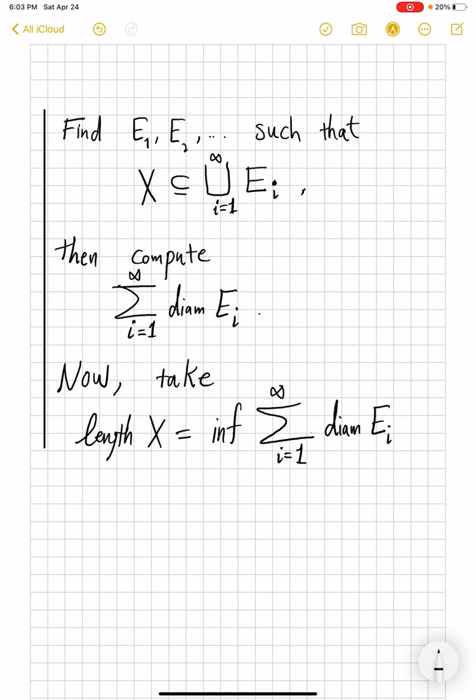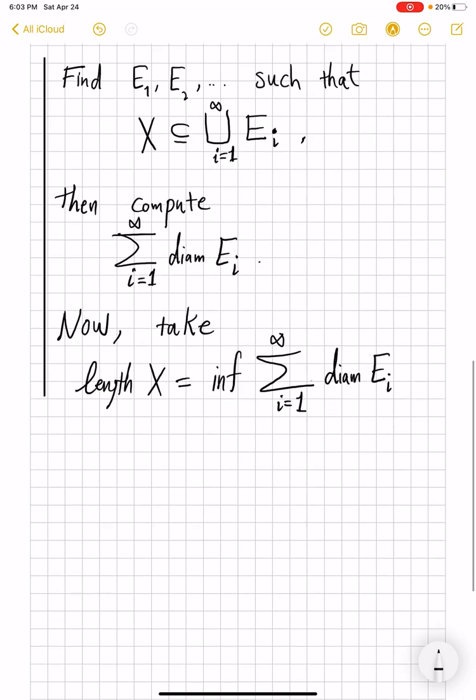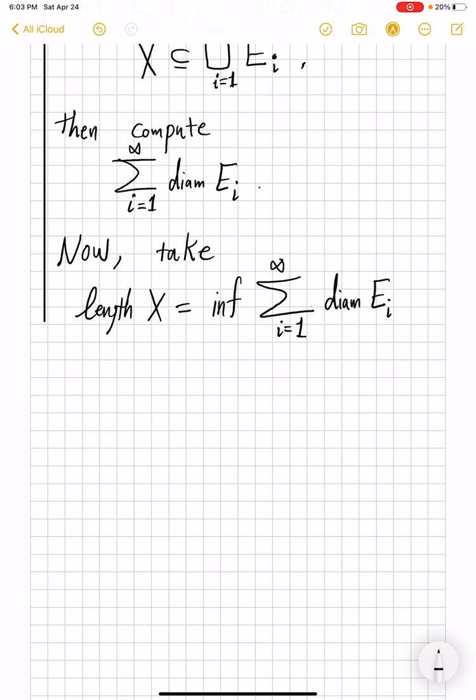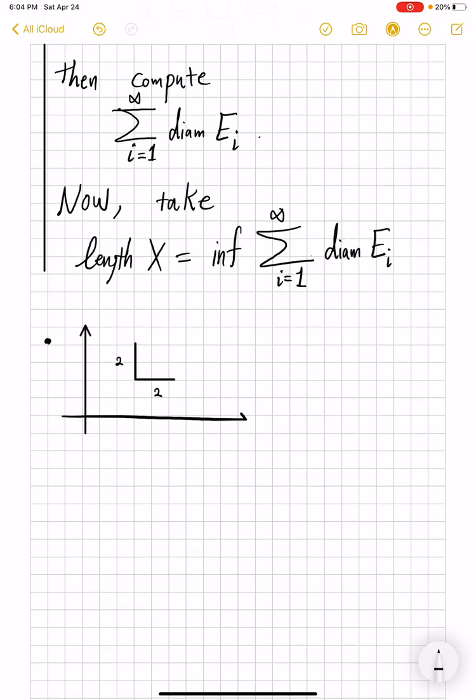So infimum is over all possible ways of writing X as a subset of collection of E_i. Now, does this give us the length of subsets of R^2? The answer is no. Even in the simplest cases, it does fail. So one example that I can give you is, suppose you have just an L. And here, suppose this length is 2, and this length is 2 as well. Now, if you are trying to find, so this infimum of summation of, so number one, diameter of X is equal to 2√2. That is the furthest pair of points from one another.